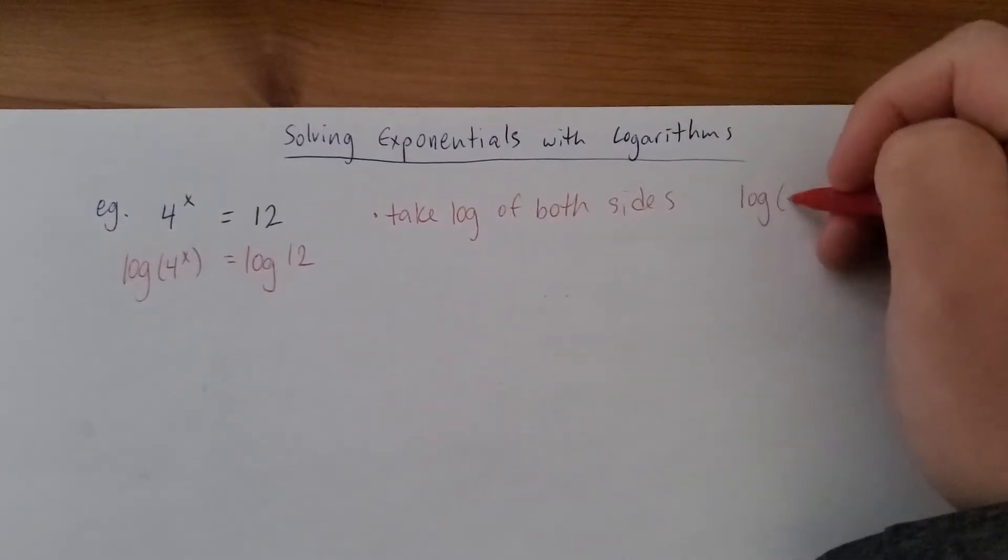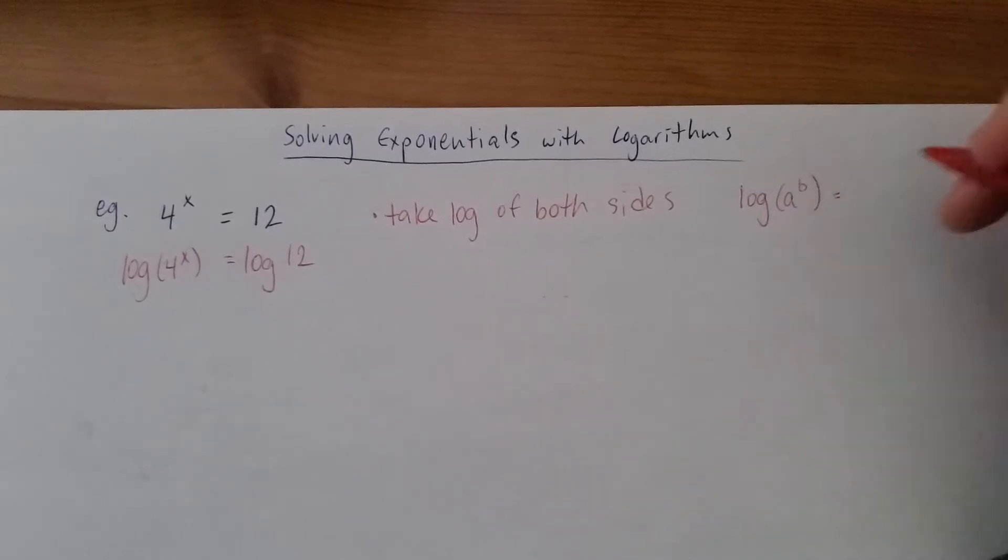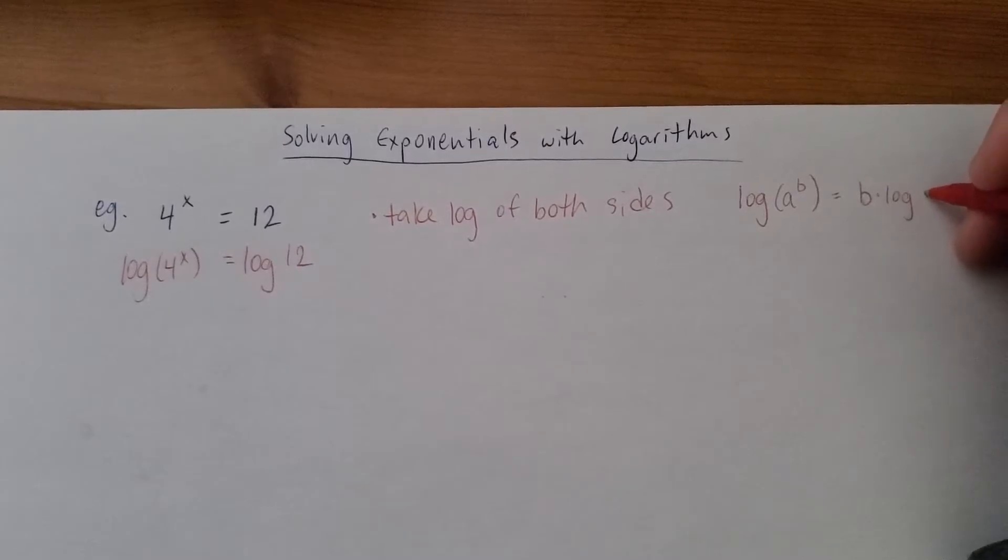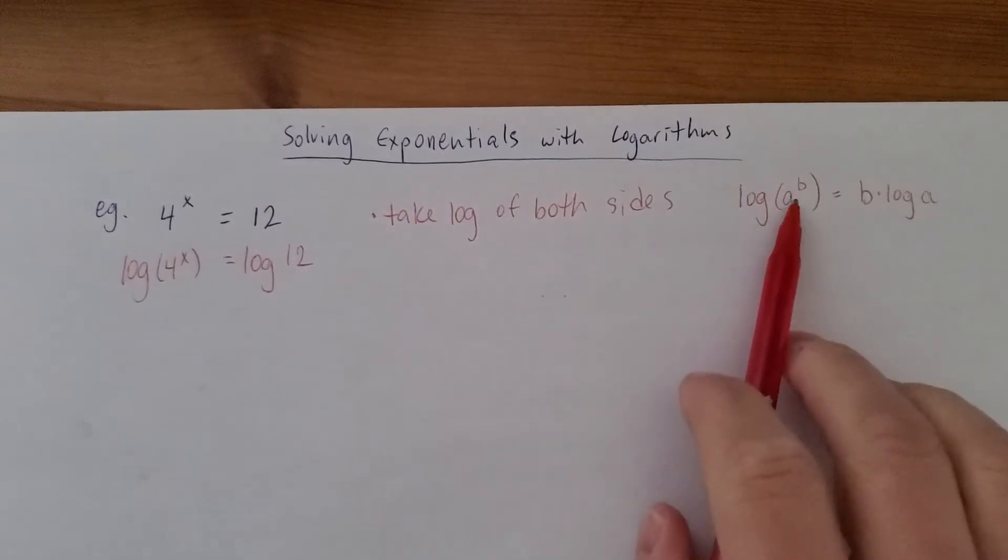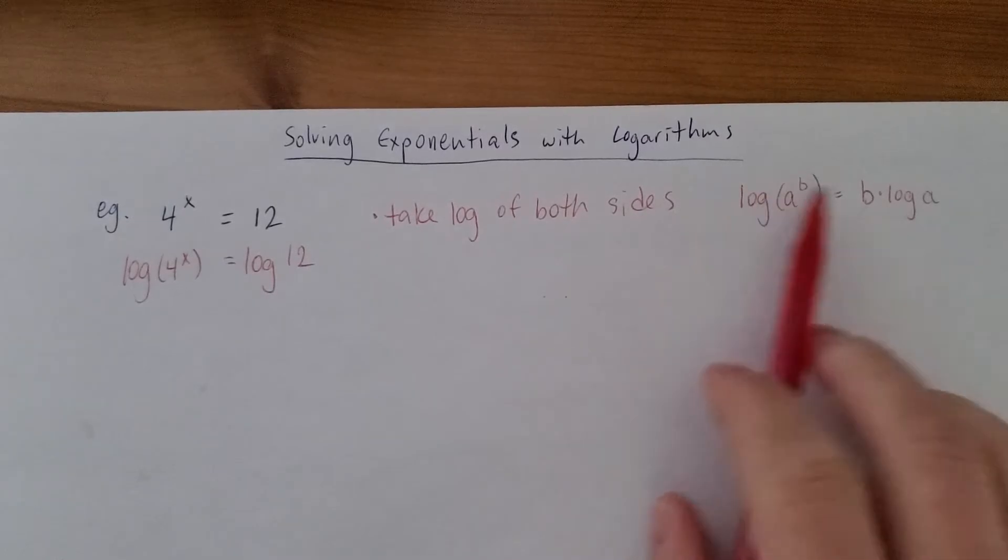Log of, say, a to the power of b. This is one of those rules, is equal to b times log a. So if you have an exponent inside a log, you can actually pull it out of the log and multiply.